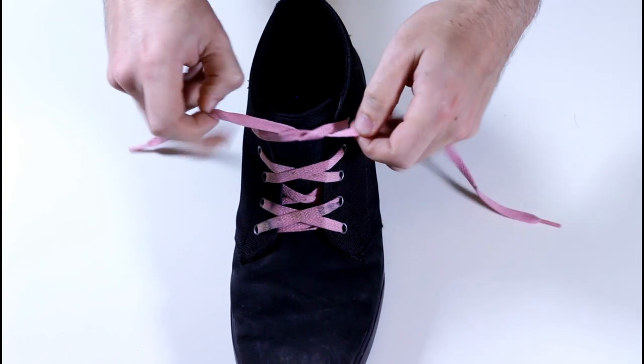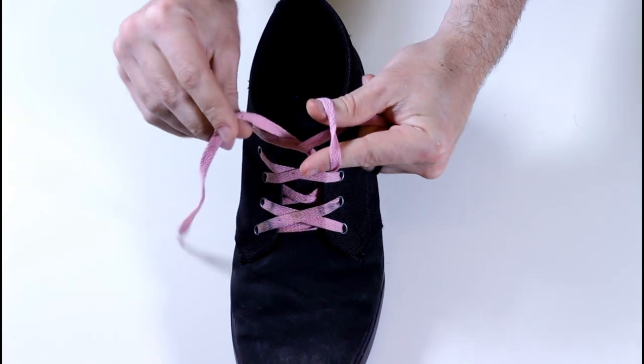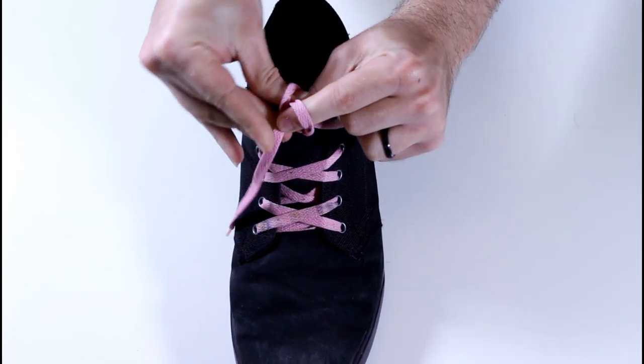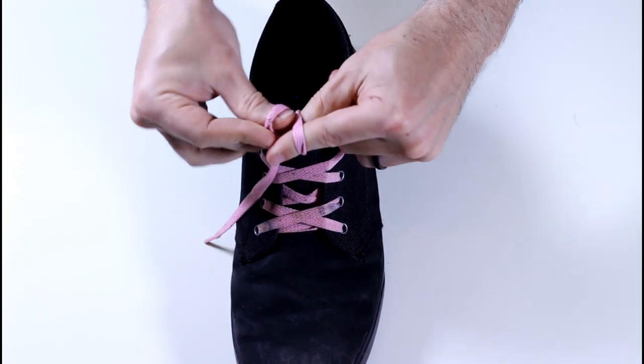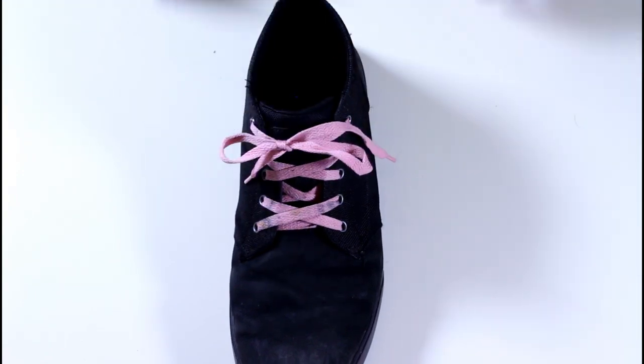There we go. Watch again. I grab this one here, grab this one here, and pull them through each other. The bow just happens around them. If you practice, you can probably do it in less than a couple of seconds.